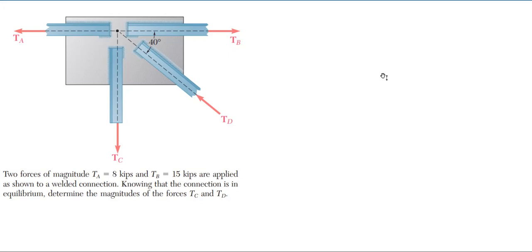So what we're going to be working on is this problem shown on screen here, and this is an equilibrium problem. We have two forces of magnitude TA equal to 8 kips, TB is 15 kips, applied to this welded connection as shown. Knowing that the connection is in equilibrium, determine the magnitudes of forces TC and TD.